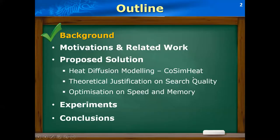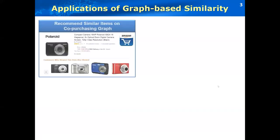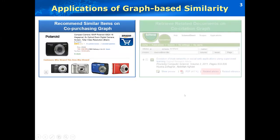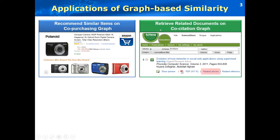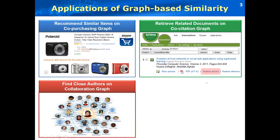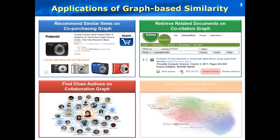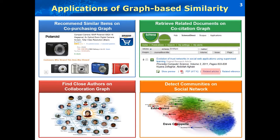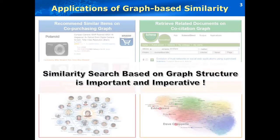First, I would like to introduce the background of my research. Many applications require measure of similarity between objects based on network topology. For example, in Amazon website, we can use similarity search to recommend similar items based on co-purchasing network. Similar applications include retrieving related documents on co-citation graphs, finding similar co-authors on the DBLP collaboration network, and identify communities in social networks. So, similarity search based on network topology is very important and imperative.